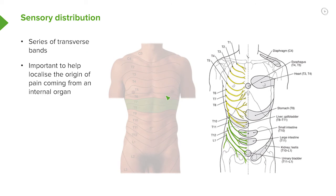If we look here we can see a series of transverse bands. Here we can locate them as T10, T11, T12, L1. These are the regions of the spinal cord that these spinal nerves originate from.